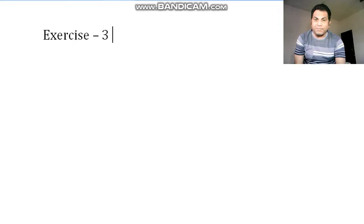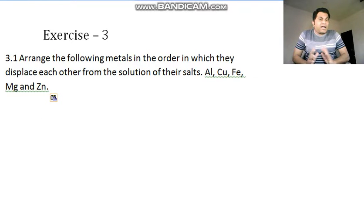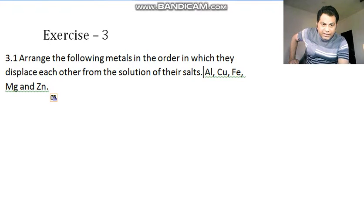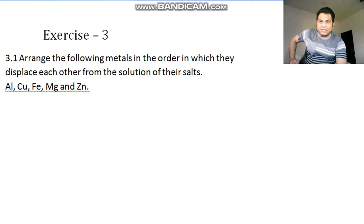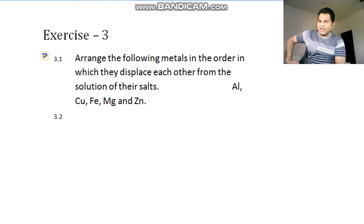Please be ready for the first question. Arrange the following metals in the order in which they displace each other from the solution of their salt. We are given 5 metals: aluminum, copper, iron, magnesium and zinc. We have to derive them into their character wise thing - who will displace whom.